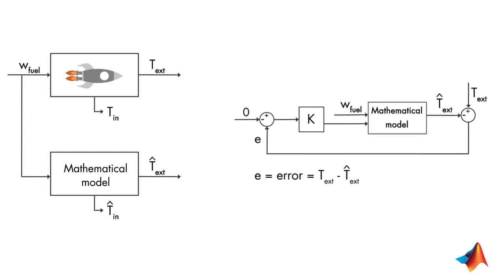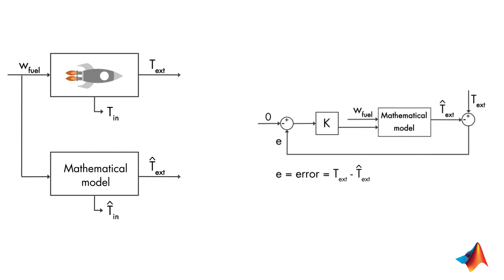If we now update our diagram on the left-hand side based on what we've discussed here, it will look like this. This part represents the state observer. By closing the loop with a controller K around the observer, we try to eliminate the error between the estimated and measured external temperature such that the estimated internal temperature is driven to its true value.